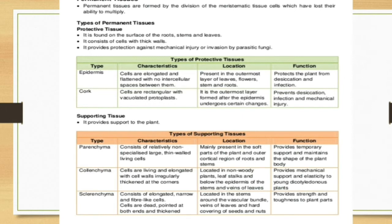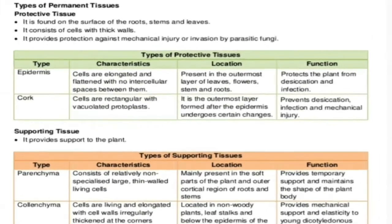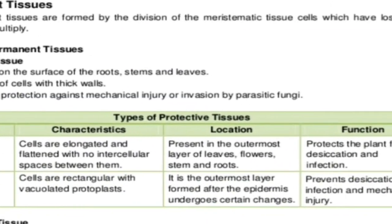Now let us start the permanent tissues. What are permanent tissues? The meristematic tissues later on get converted into permanent tissues — when they permanently drop their habit of division and attain a particular function, they are said to be permanent tissues.